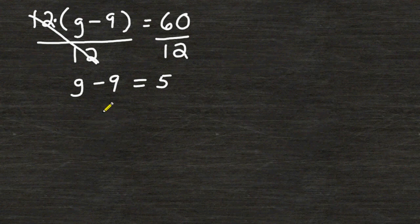The next thing that we are going to do is get rid of this minus 9 on the left hand side. Because we are trying to get the letter g all by itself. And the opposite of taking 9 away is to add 9. And we have to do that to both sides of our equation.